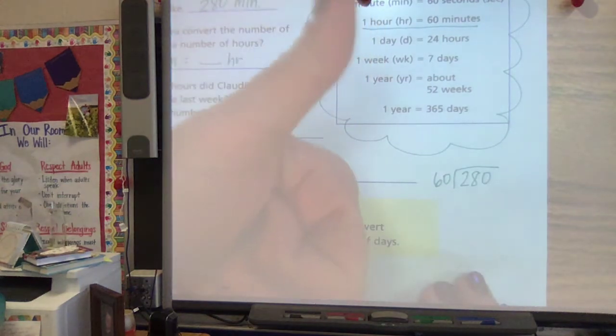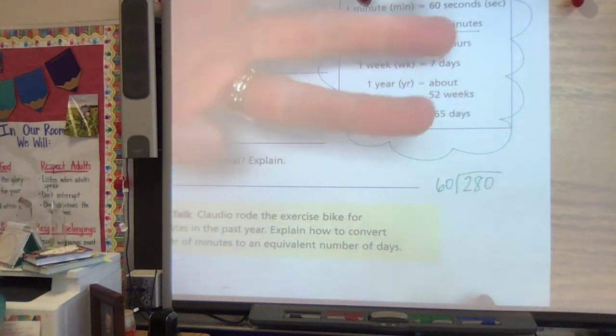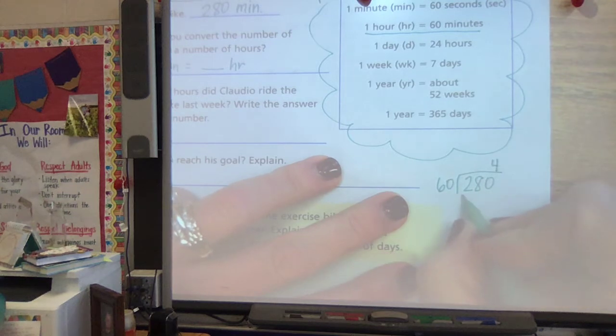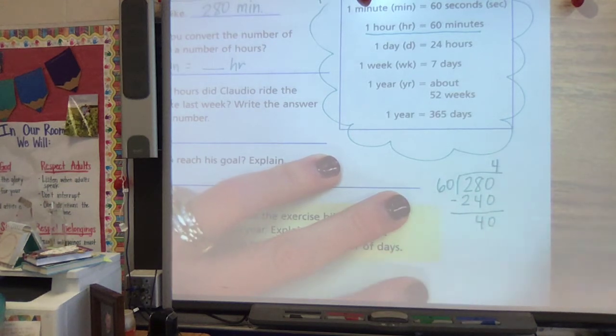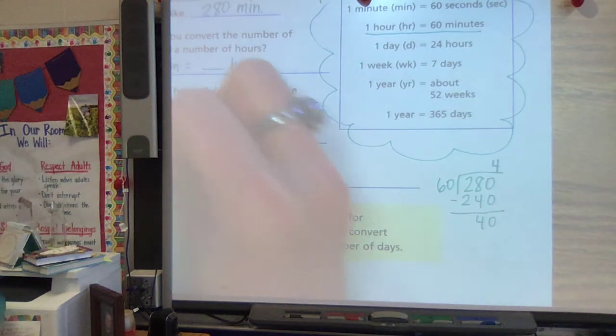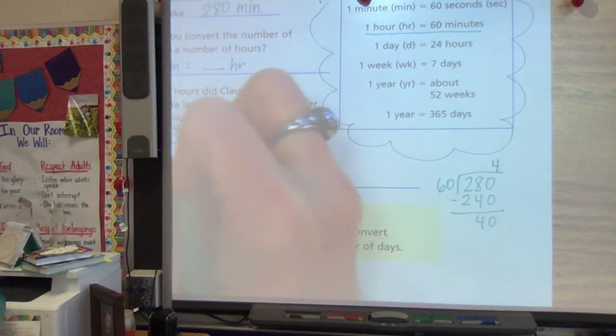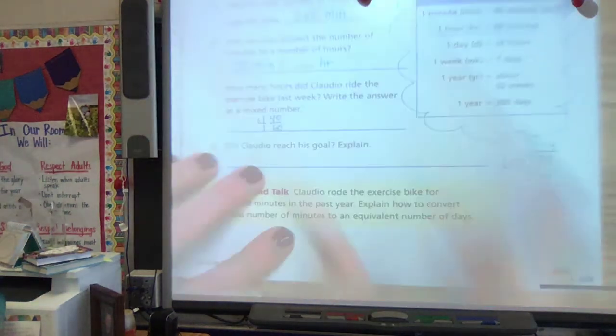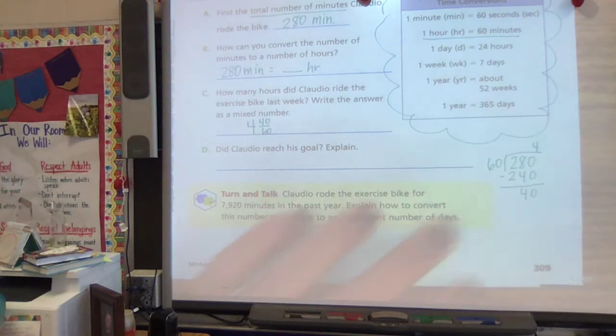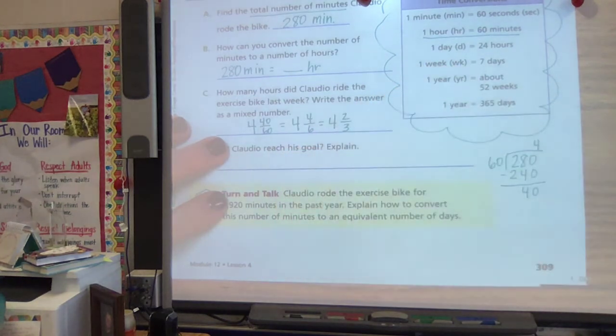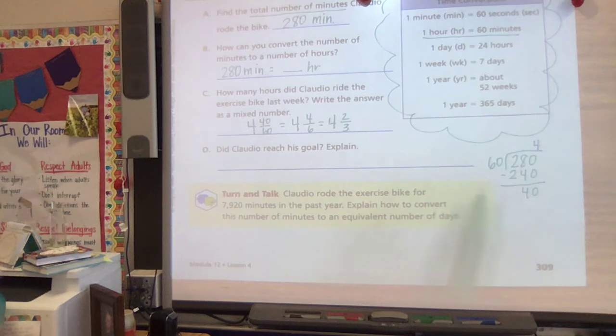Because there's 60 minutes in an hour. I know that 60 will go into 280 four times because that would be 240. So that means it was 4 hours, but also 40 minutes out of 60 because I had 40 minutes left over. I could also say that's 4 and 4/6 or 4 and 2/3 hours because if an hour is split into increments of 20, 20, 40, 60, I have two of those thirds.